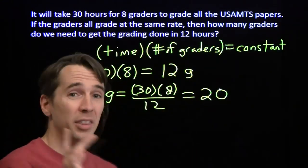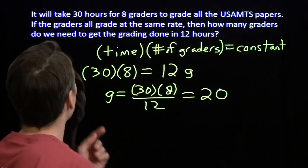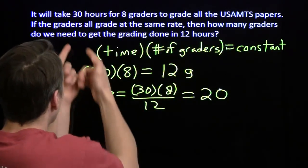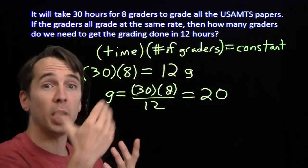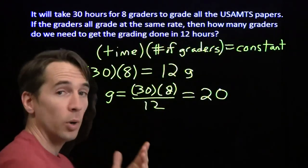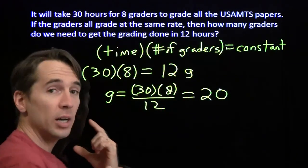We also could have solved this problem by thinking about scaling. We want to scale 30 hours down to 12 hours. To get from 30 down to 12, we multiply by 12 over 30, which is 2 fifths. So to scale from 30 down to 12, we multiply by 2 fifths. That means the graders, we need to multiply that by the reciprocal of 2 fifths.